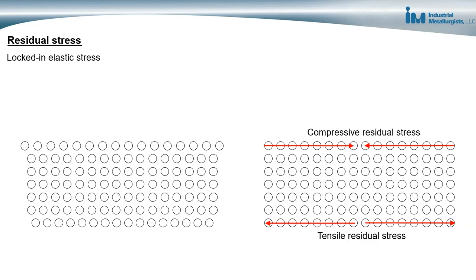The diagrams on the left and right illustrate the concept of residual stresses. In the diagram on the left, it shows the atoms in a metal. We see that the top row of atoms are elongated in the horizontal direction, and the bonds between the atoms are stretched compared to the atoms below.